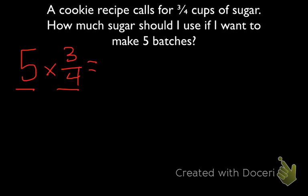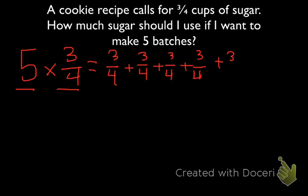Using our skills from yesterday, we can just look at this as repeated addition. So that would be 3 fourths plus 3 fourths plus 3 fourths plus 3 fourths plus 3 fourths. Of course, if we're working with bigger whole numbers, it's going to be kind of inconvenient to do repeated addition. So let's use an algorithm instead.